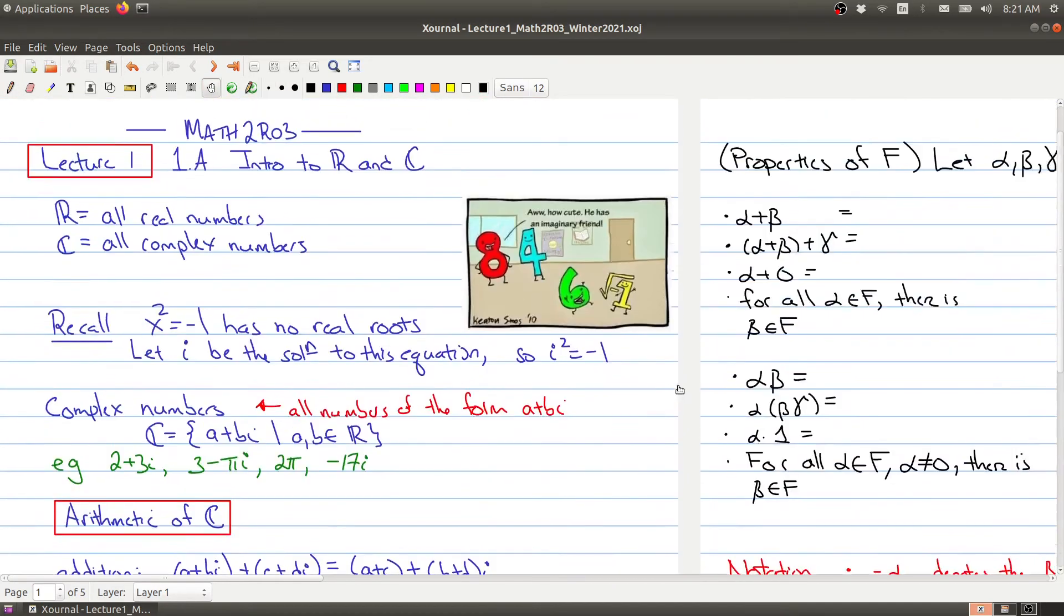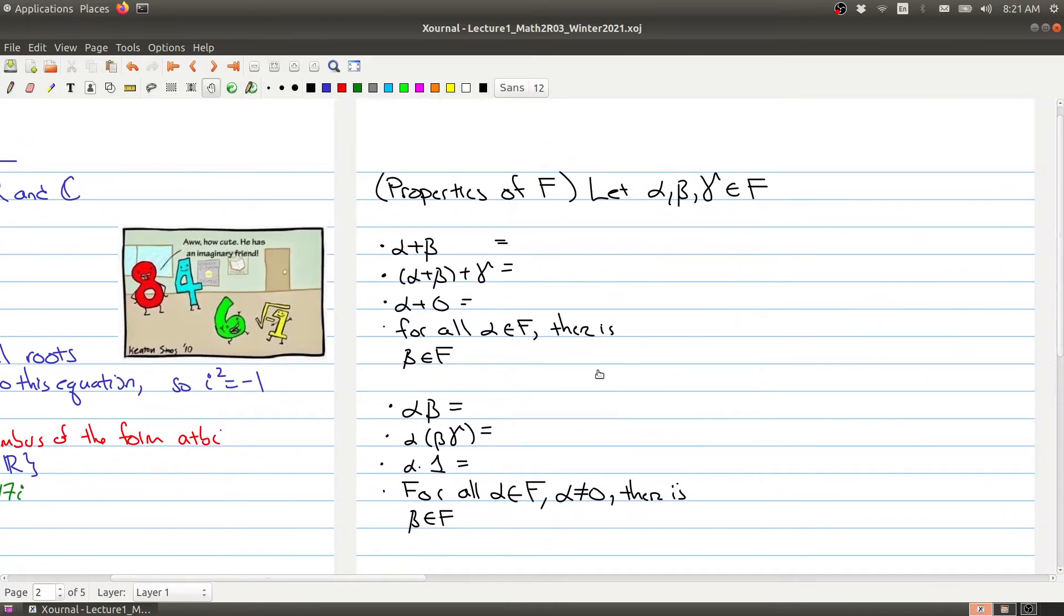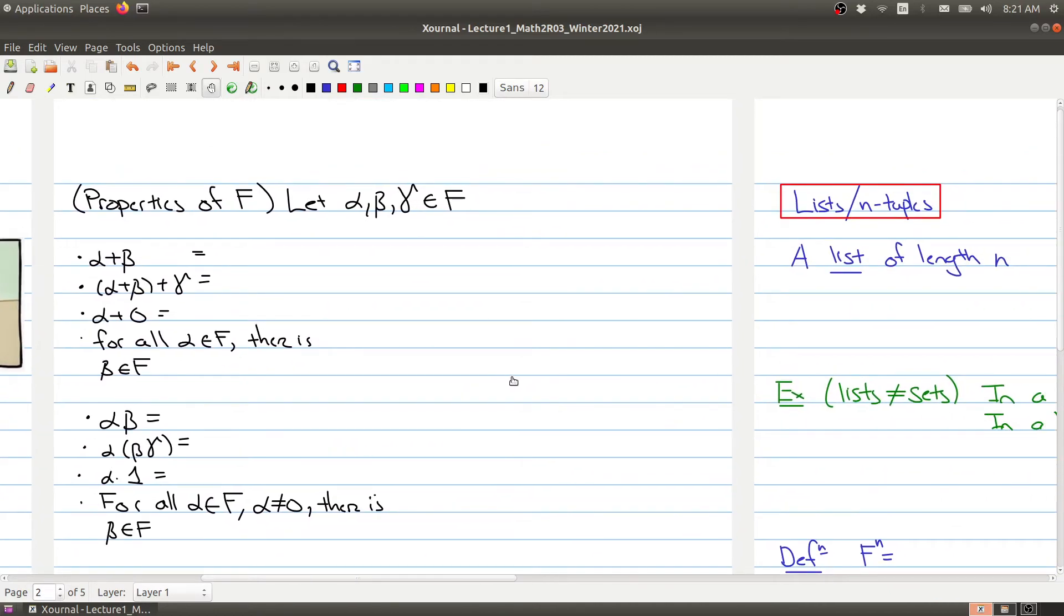Now there's a whole bunch of properties of the field F. So here I'm using F to mean either the real numbers or the complex numbers, so pick which one you want to work with and then take three numbers alpha, beta, gamma inside of your set F. And then what sort of properties do you have? Well, addition commutes. The order in which you add two elements doesn't matter, so this says that addition commutes.